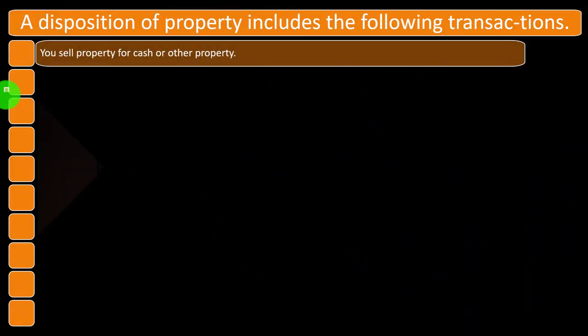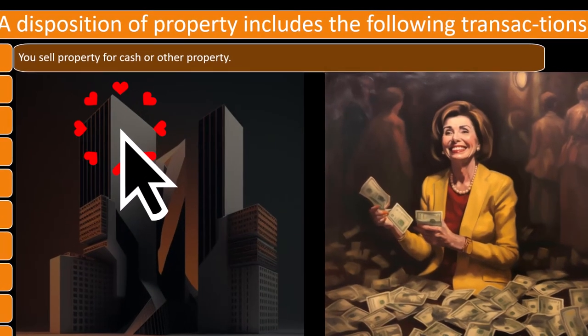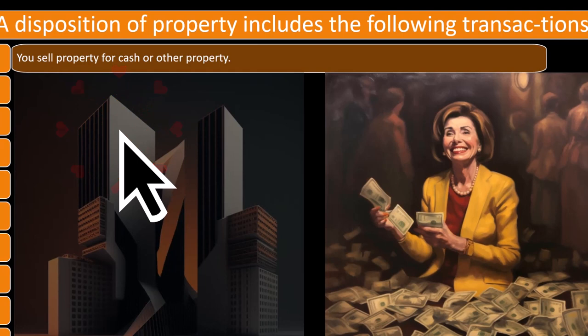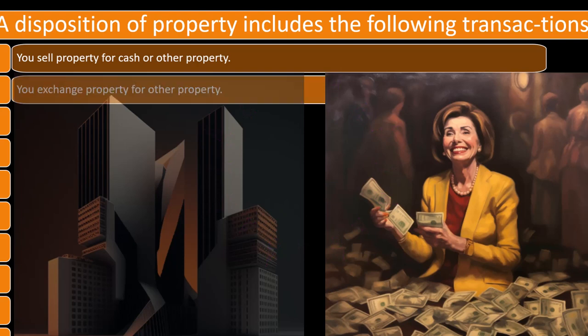A disposition of property includes the following transactions: You sell property for cash or other property. When you sell the property, you might get cash for it, or you might trade it in — get something other than cash — which still means a sale took place. It's a barter situation, which still could be a tax-triggering event.